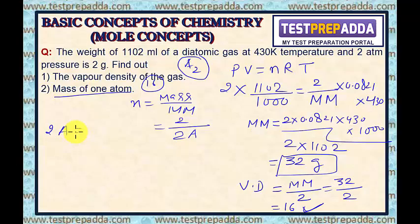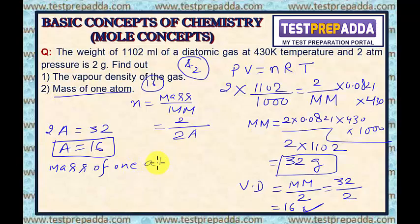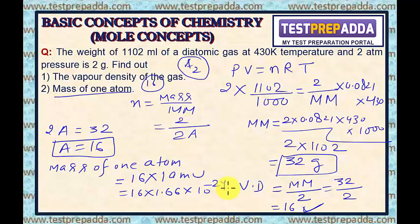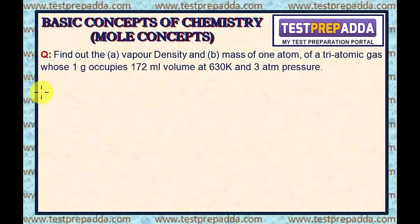For the second part, since the gas is diatomic (A₂), molar mass = 2A = 32, so atomic mass A = 16. The mass of one atom is 16 × 1 amu = 16 × 1.66 × 10⁻²⁴ grams = 2.656 × 10⁻²³ grams.